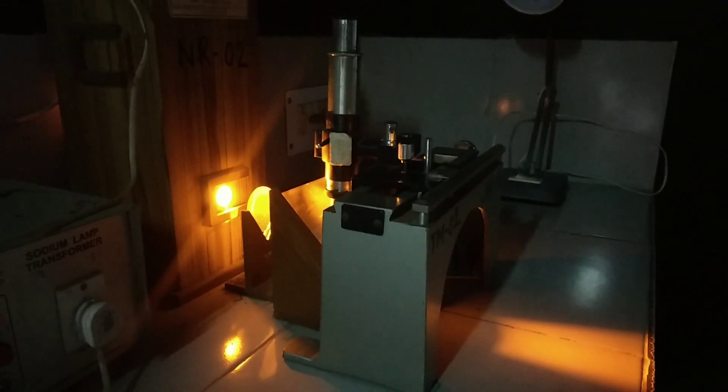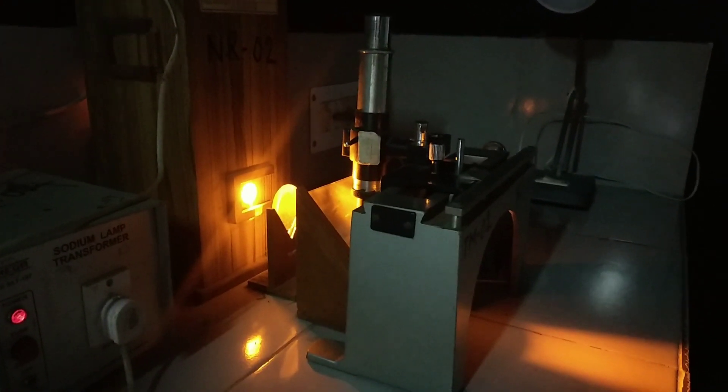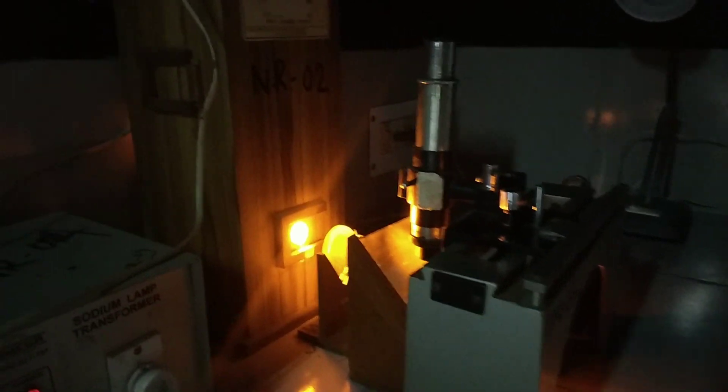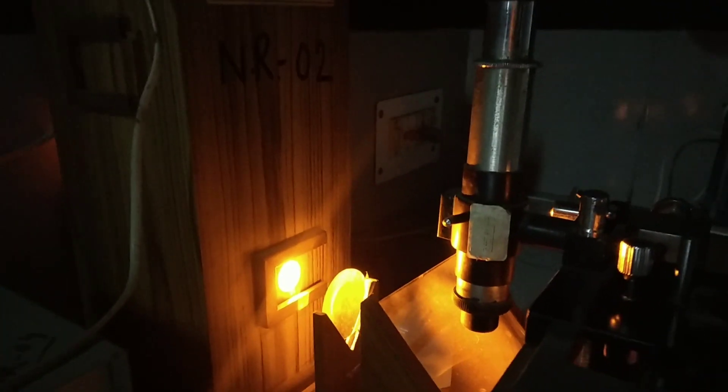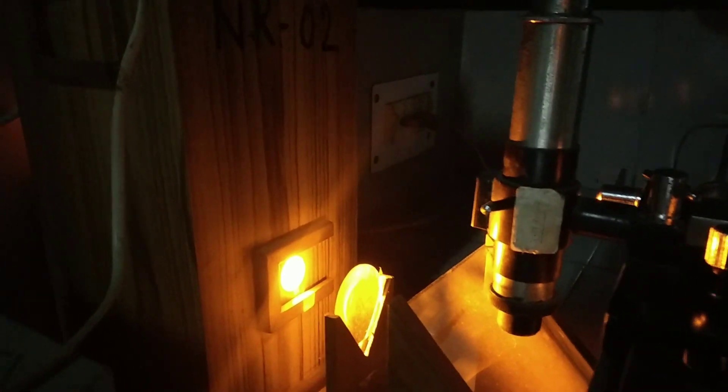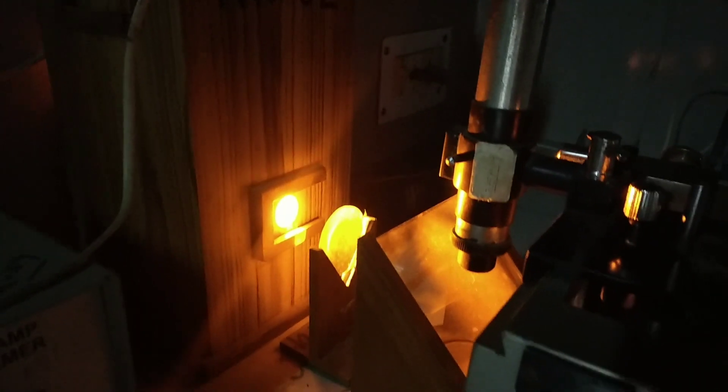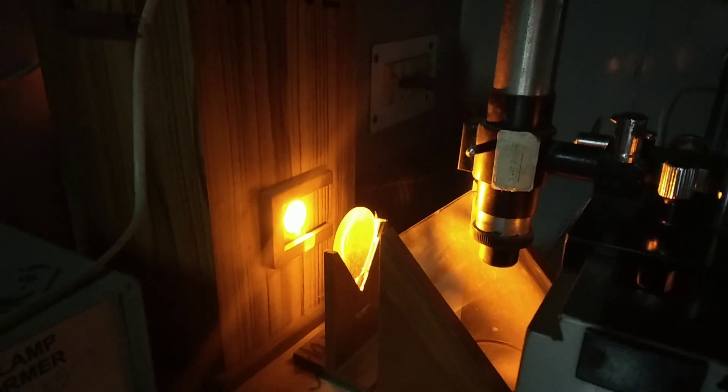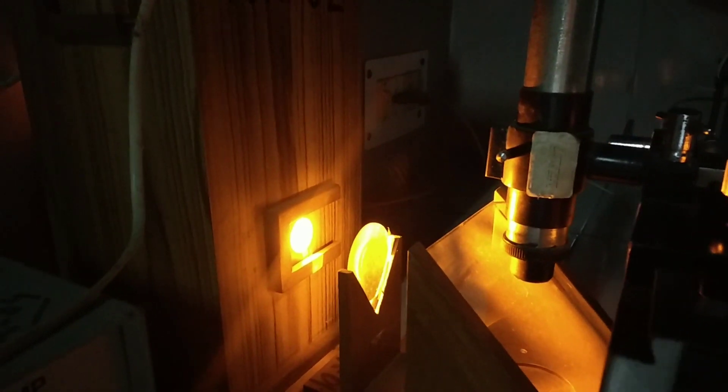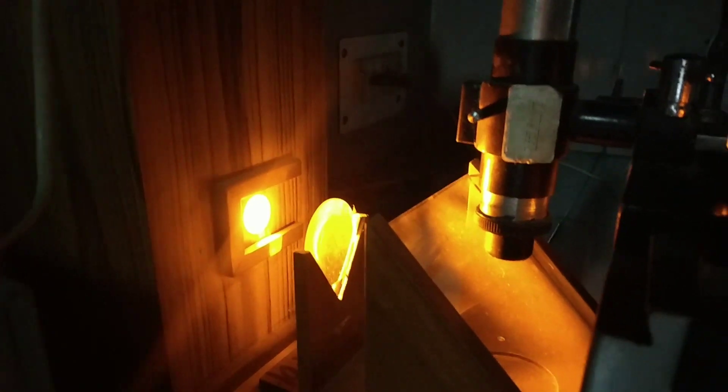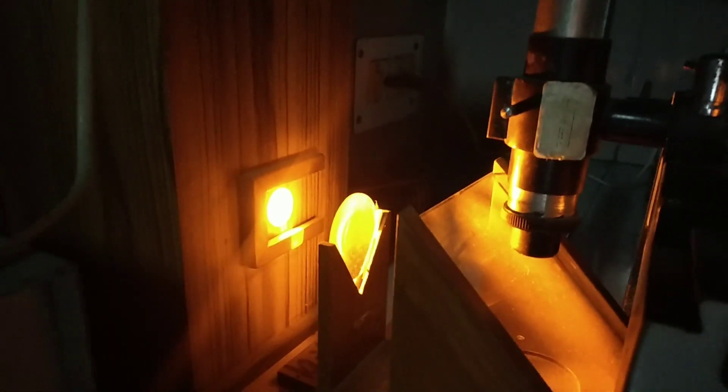The phenomenon of Newton's rings is an illustration of the interference of light waves reflected from the opposite surfaces of a thin plume of variable thickness. This is the monochromatic source of light.